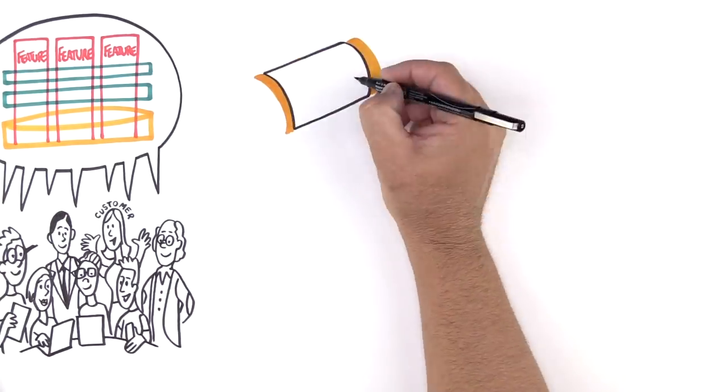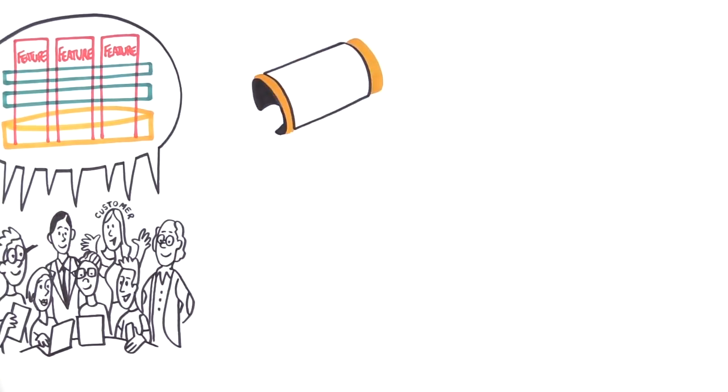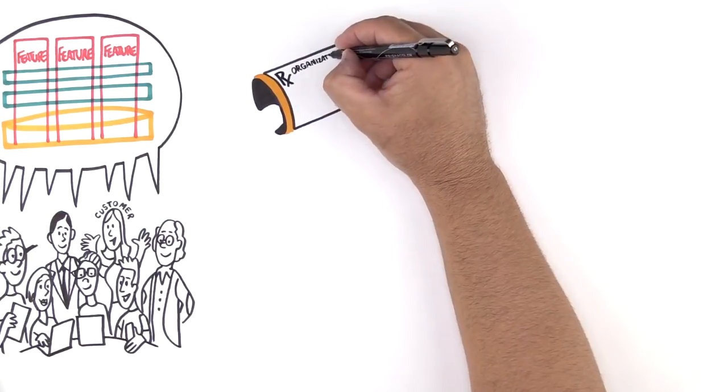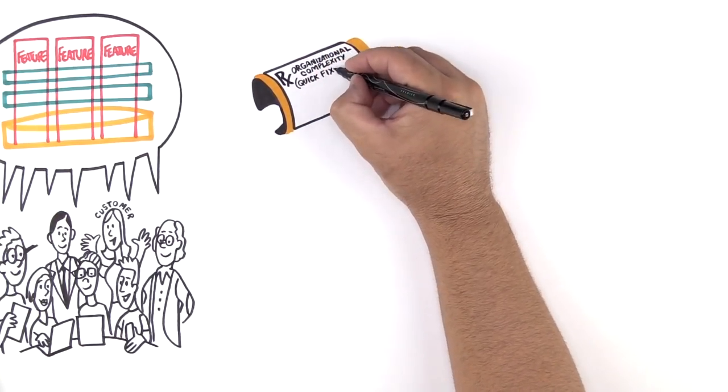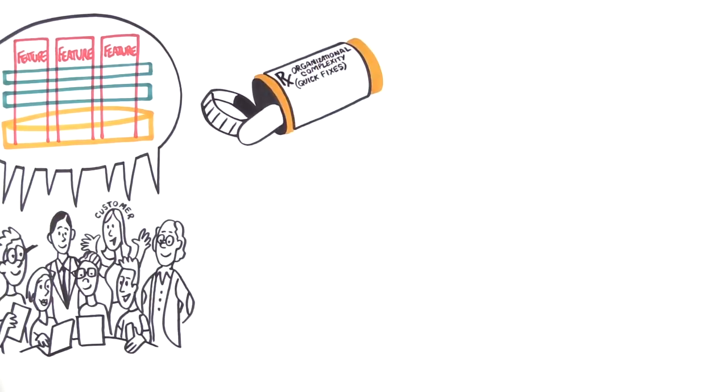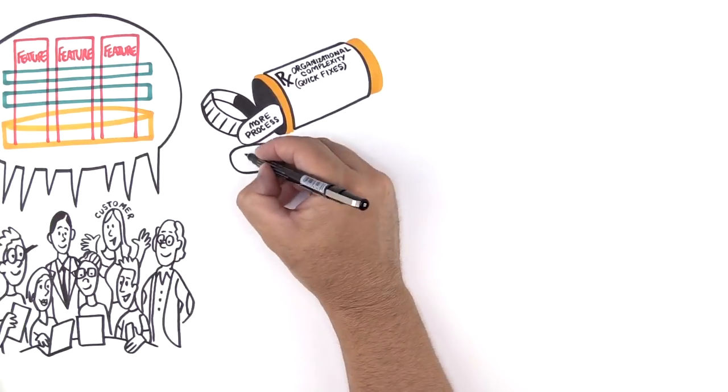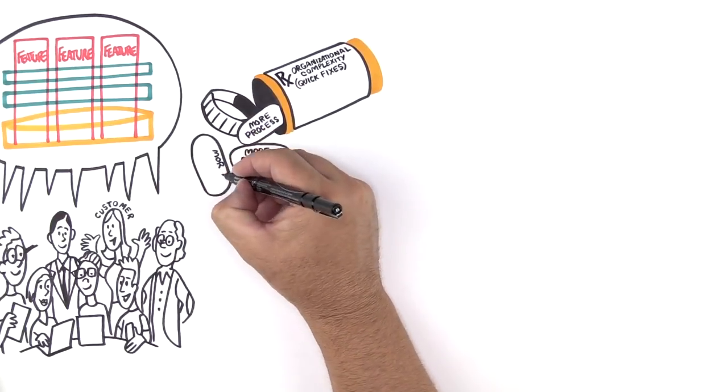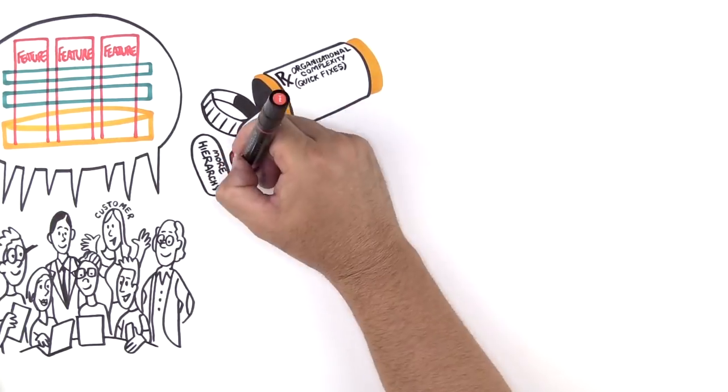Organizations often try to solve immediate problems by adding complexity. For example, let's say our product crashed in production because a team neglected to run a test. My first reflex as a manager would be to impose prescriptive process steps on the teams, assign someone new to a specialized role, or form a new department to prevent this error in the future.